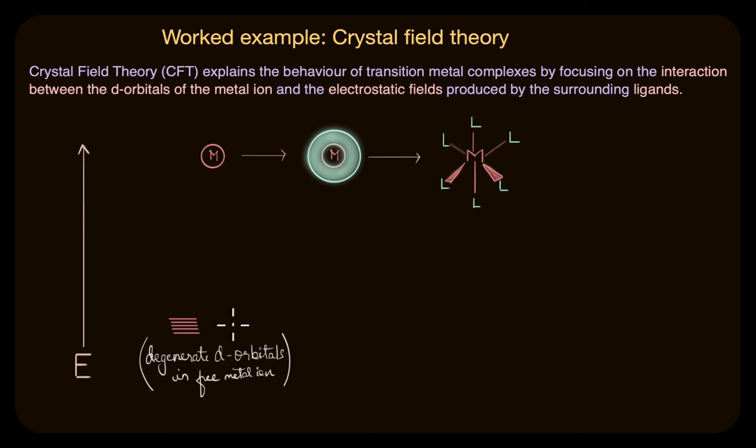And this degeneracy is maintained if a spherically symmetrical field of negative charge surrounds the central metal ion. In that case, the energy of the d-orbitals increases. However, they are still able to maintain their degeneracy. The d-orbitals are still degenerate here.